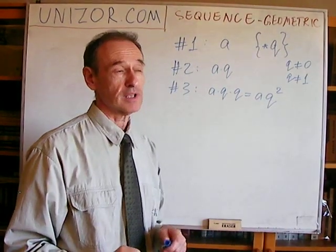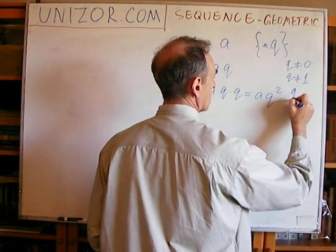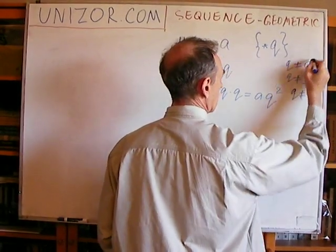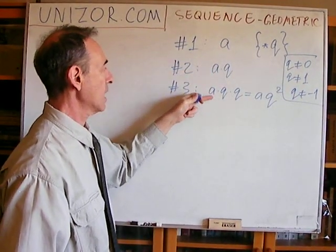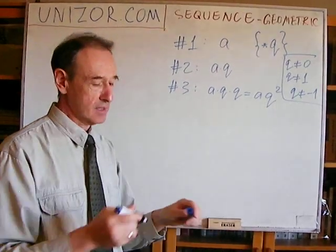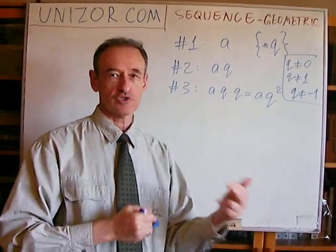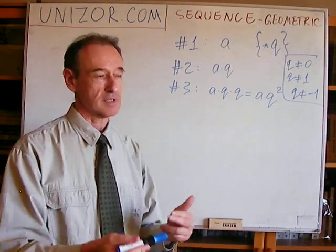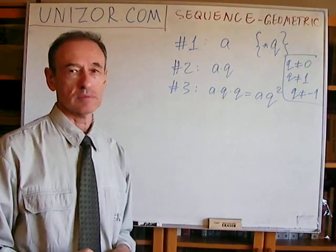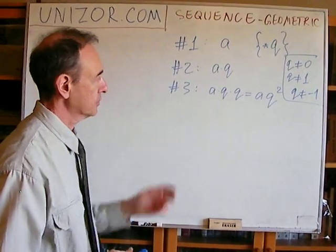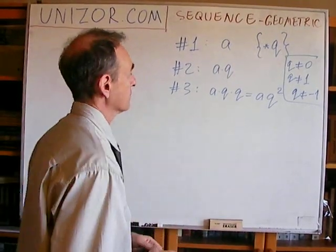It's also not very interesting if q equals minus one, because you will have a, then minus a, then a, then minus a. It's just two values jumping left and right — a, minus a, a, minus a. Trivial case. So these are not really restrictions, just cases I don't want to consider because they are very trivial.